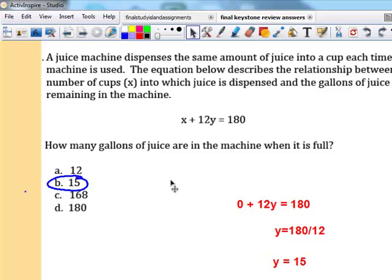You need to have some common sense. What they're asking you for is how many gallons of juice are in the machine when it's full. Well it is full when you use no cups. So when you dispense zero cups, let X be zero and you solve for Y. Remaining gallons, I can see the answer is 15 gallons. That's a tricky problem, but you have to read it, use some common sense, and it should make sense. They're basically asking you for the y intercept.